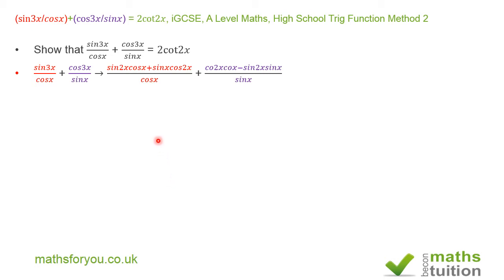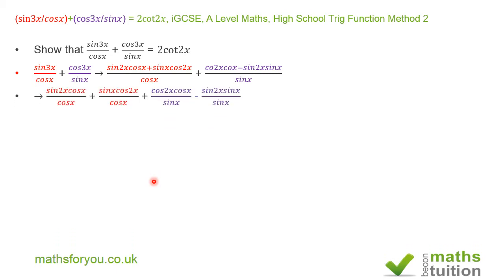Now for the red term, if I break it into two separate terms, I have sin(2x)cos(x)/cos(x) plus sin(x)cos(2x)/cos(x). For the purple terms I have cos(2x)cos(x)/sin(x) minus sin(2x)sin(x)/sin(x).